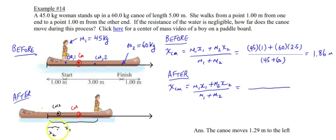See, we have m1, which is 45 times x1, and then we have the canoe, which is 60 times x2. And then we have the mass of 45 plus 60. It's still the same.